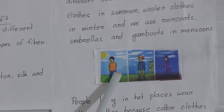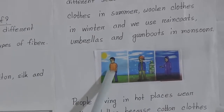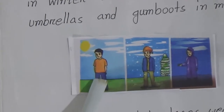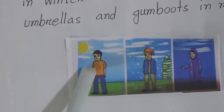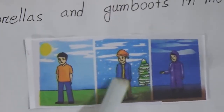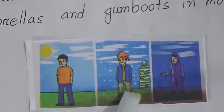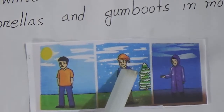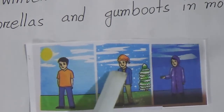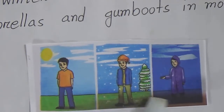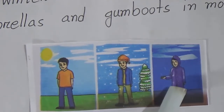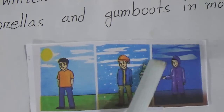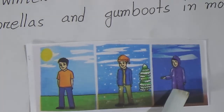You can see this picture — here we can understand that the boy wearing light clothes means this is summer. And the boy wearing a sweater and woolen cap means this is winter season. And this boy wearing a raincoat — we can understand this is the rainy season.